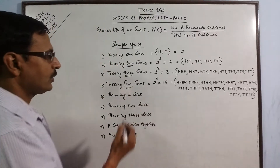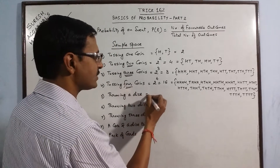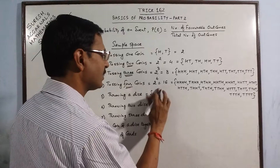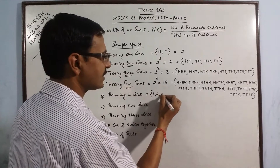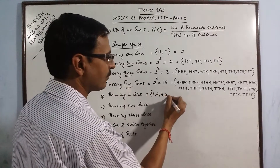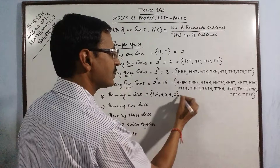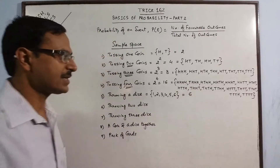Now come to dice. When you throw a dice, obviously you have 6 possible outcomes — the numbers from 1 to 6. So the total number of outcomes is 6.